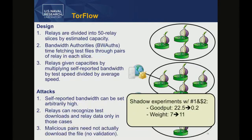We weren't the first to recognize these issues, but we implemented TorFlow to provide a basis for comparison. In our shadow experiments running attacks one and two together, we reduced the required good put from 22.5 to 0.2 — two orders of magnitude — while achieving an even higher consensus weight in the median case. The attack can give you potentially hundreds of times more consensus weight than you're paying for in actual bandwidth.